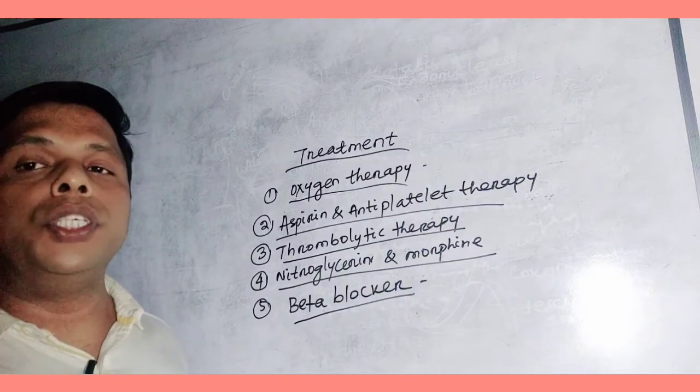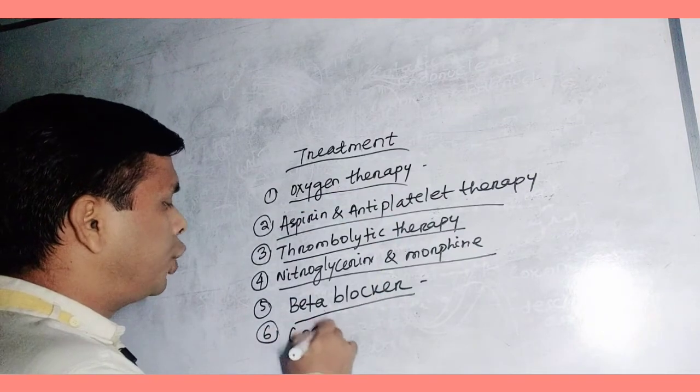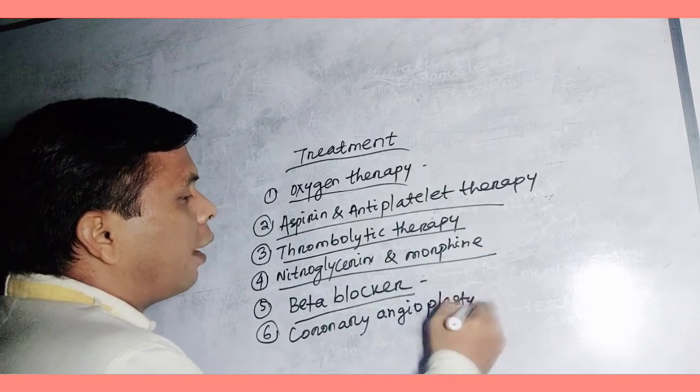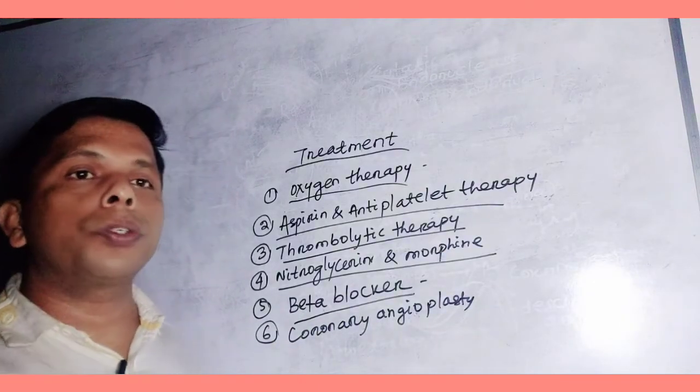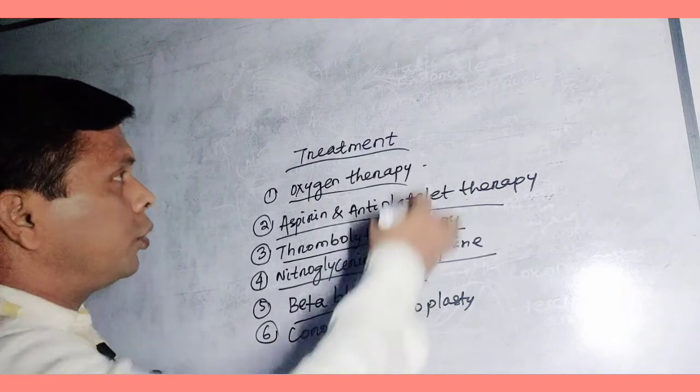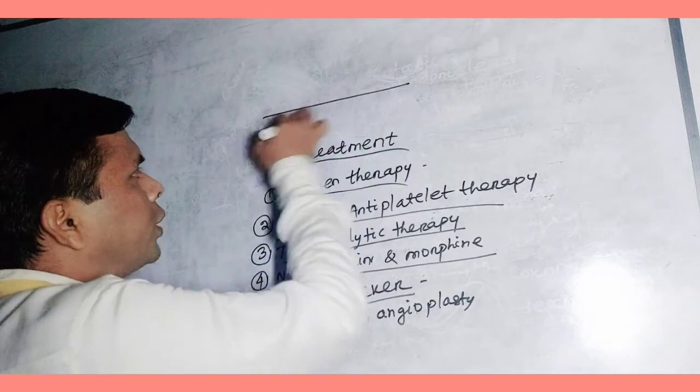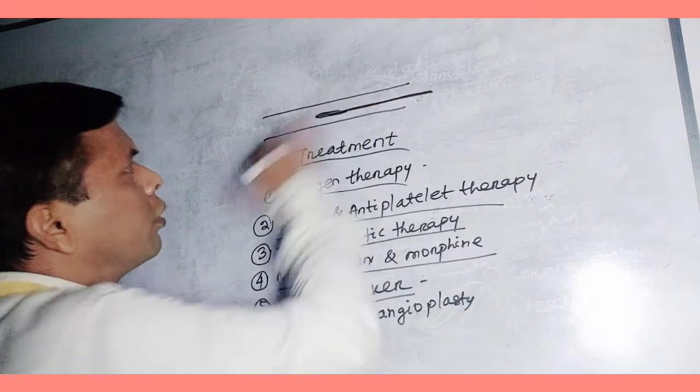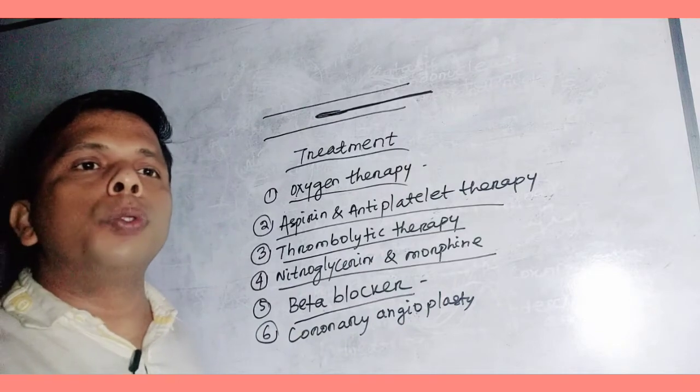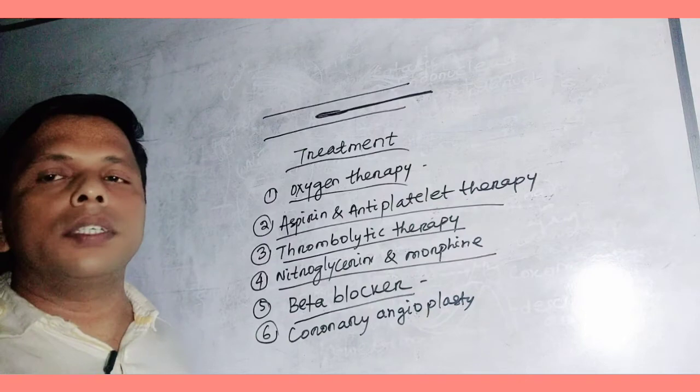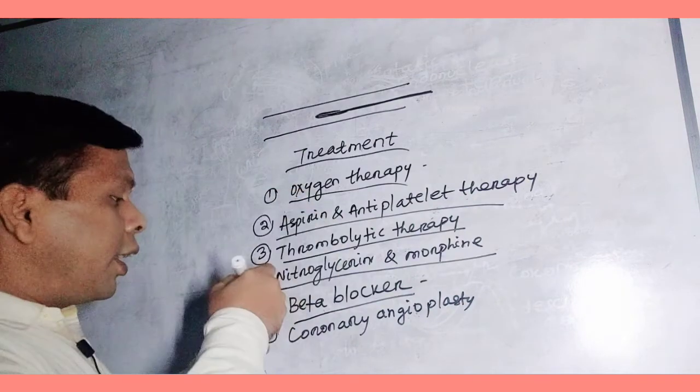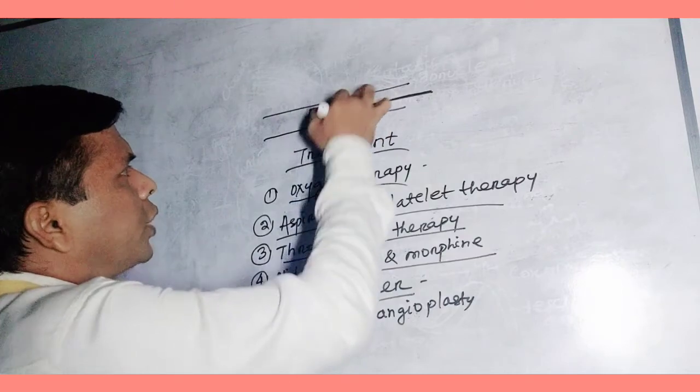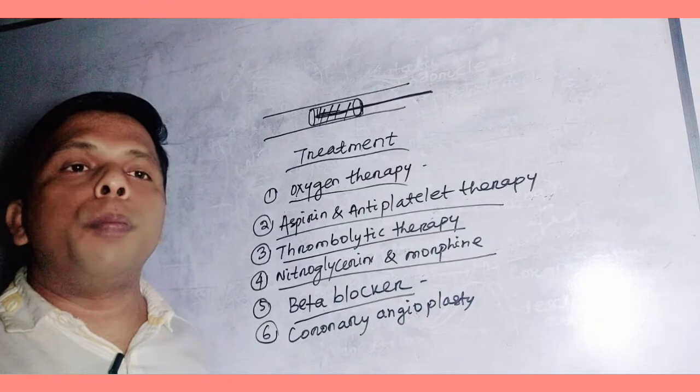Then coronary angioplasty. What happens in this condition? First, a balloon-tipped catheter is introduced. Suppose this is the vessel. A balloon-tipped catheter, it is a catheter with a balloon at its tip, introduced into the block and opened. A stent will remain here to maintain the diameter of artery. The stent can prevent the blockage.